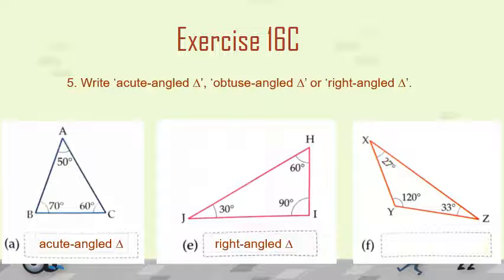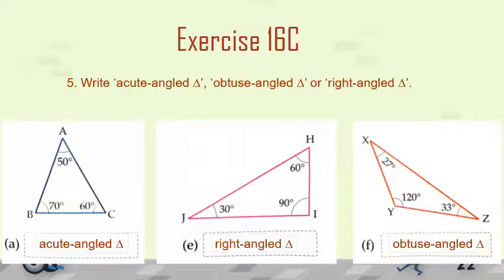Now let's move to the third figure. There is triangle XYZ where angle X is equal to 27 degrees, angle Y is equal to 120 degrees, and angle Z is equal to 33 degrees. Angle Y is equal to 120 degrees, which is more than 90 degrees but less than 180 degrees, so this is an obtuse angle, and the rest of the two angles are acute angles. Such a triangle in which one angle is an obtuse angle and the rest of the two angles are acute angles is called an obtuse angle triangle, so we write obtuse angle triangle.